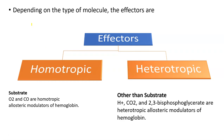Depending on the type of molecule, effectors may be two types: positive allosteric effectors and negative allosteric effectors. Negative allosteric effectors are called inhibitors; positive allosteric effectors are also called activators.